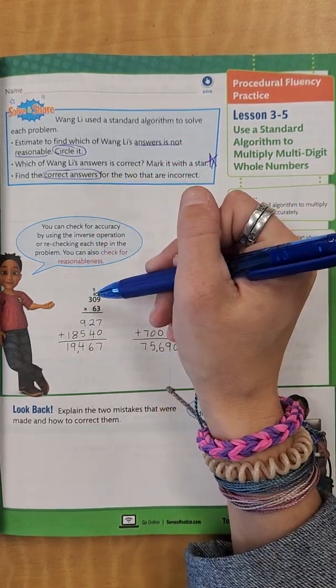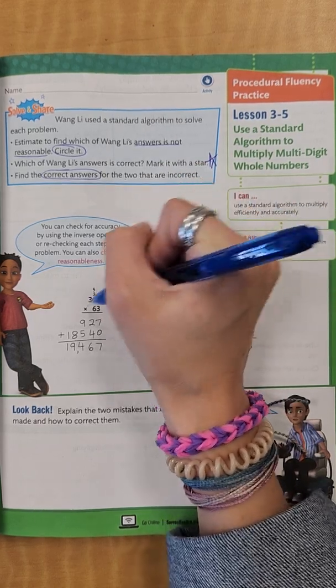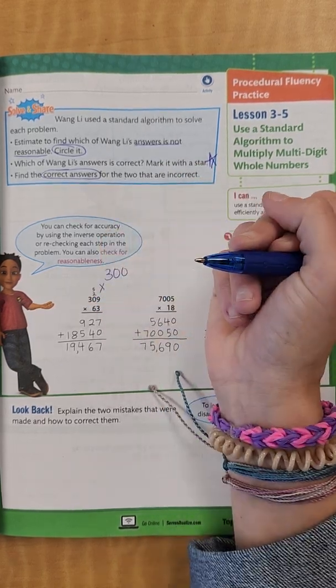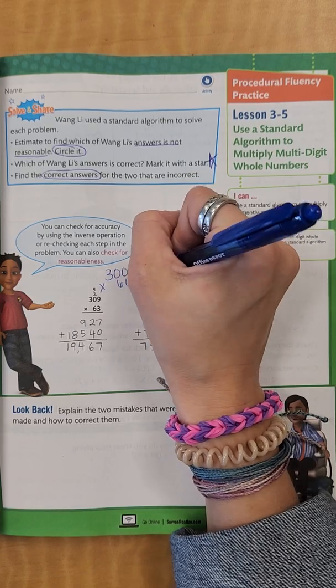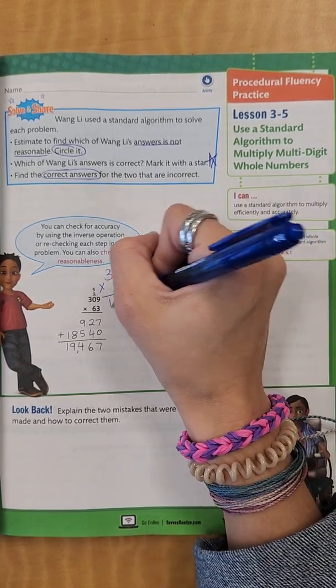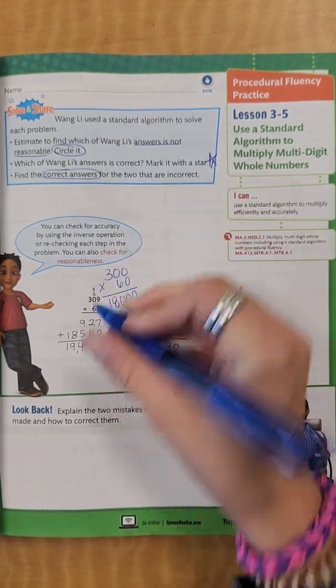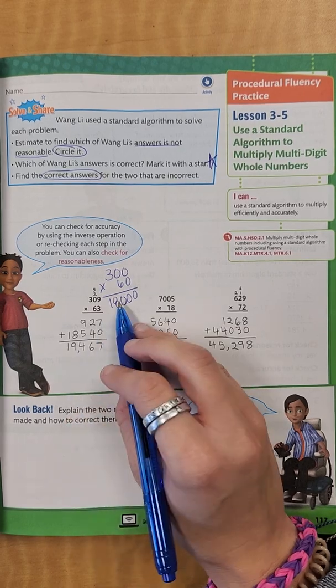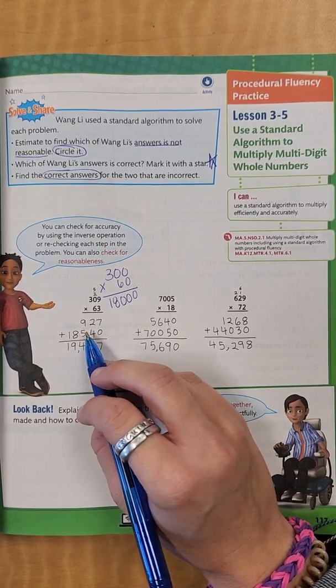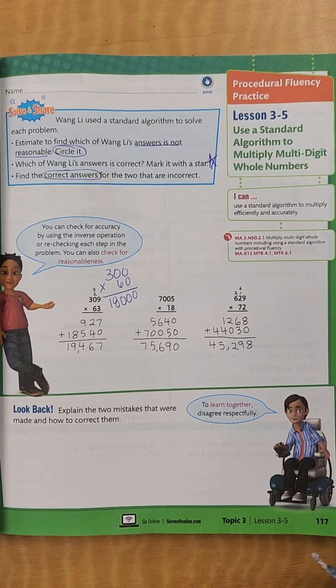So this one I would estimate 309 to be 300 times 63 would round to 60. So I'm looking at that. I know that 3 times 6 is 18 and I add 1, 2, 3 zeros. So this one could be right. We'll leave that as it is for right now.